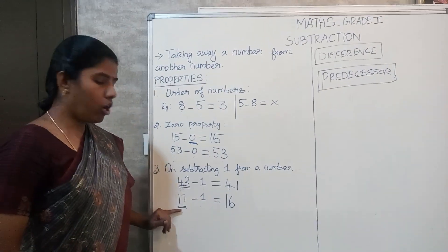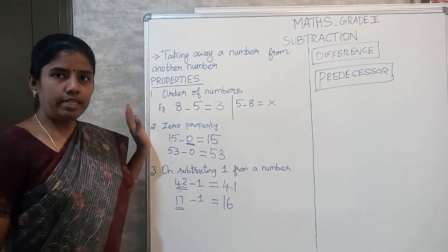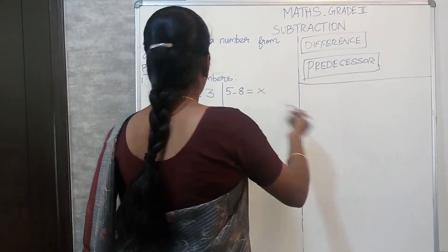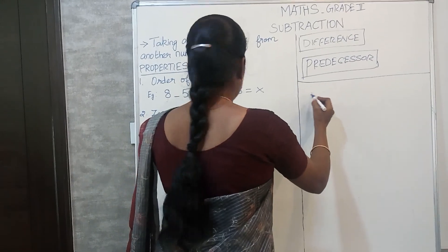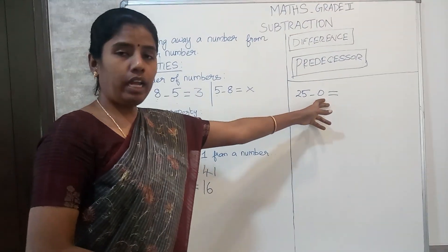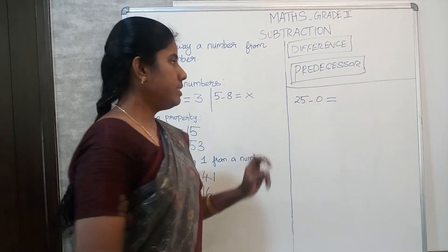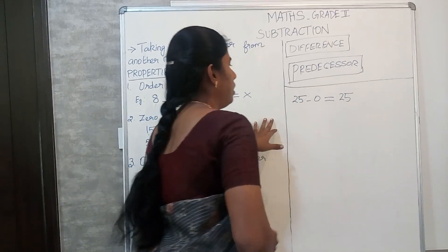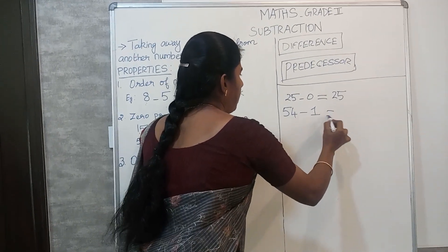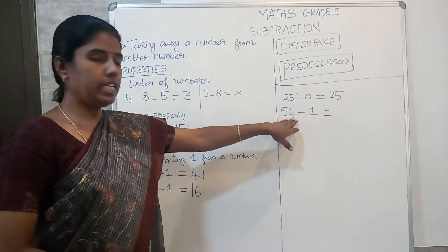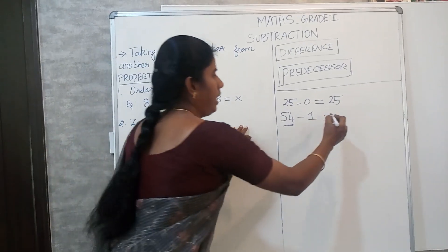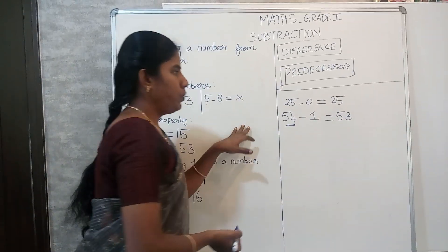So we have learned the new term 'predecessor' for the before number or previous number. Using all these properties, let us see a few examples. What would be 25 minus 0? If we take away 0 from any number, we get the same number, so the answer is 25. What happens when we take away 1 from any number? We find the predecessor — the before number. So 54 minus 1: the previous number of 54 is 53, so the difference is 53.